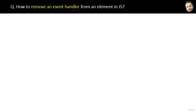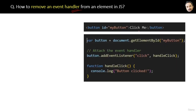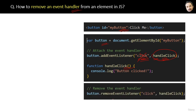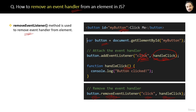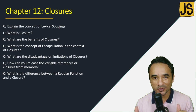How do you remove an event handler from an element in JavaScript? Suppose we have a button, we get its reference, attach a handleClick event handler, but at some point we no longer want the event to fire. To remove the event handler, we call the removeEventListener() method on the element, passing the event name 'click' and the event handler function name. The answer is: removeEventListener() is used to remove the event handler from the element.